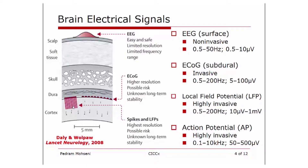Going into the brain and depending on how close you can get to active neurons, this will obviously be a highly invasive mode of recording, but in return you can have much higher frequency components in your recorded signal — up to 10 kilohertz for action potentials — and also much higher amplitudes. The same electrodes used for recording action potentials can also record local field potentials or LFPs, which arise from the aggregate activity of a large population of neurons and therefore have lower frequency components but can have higher amplitudes.